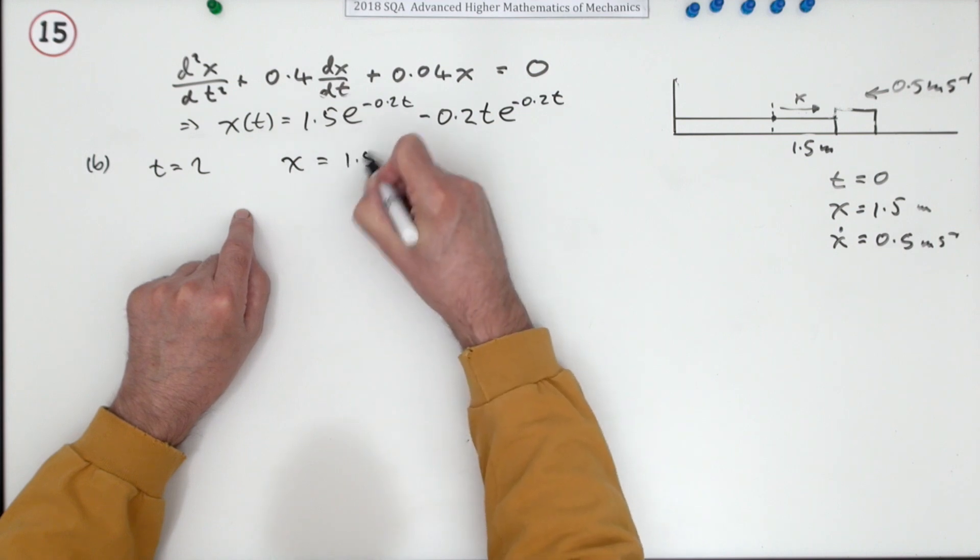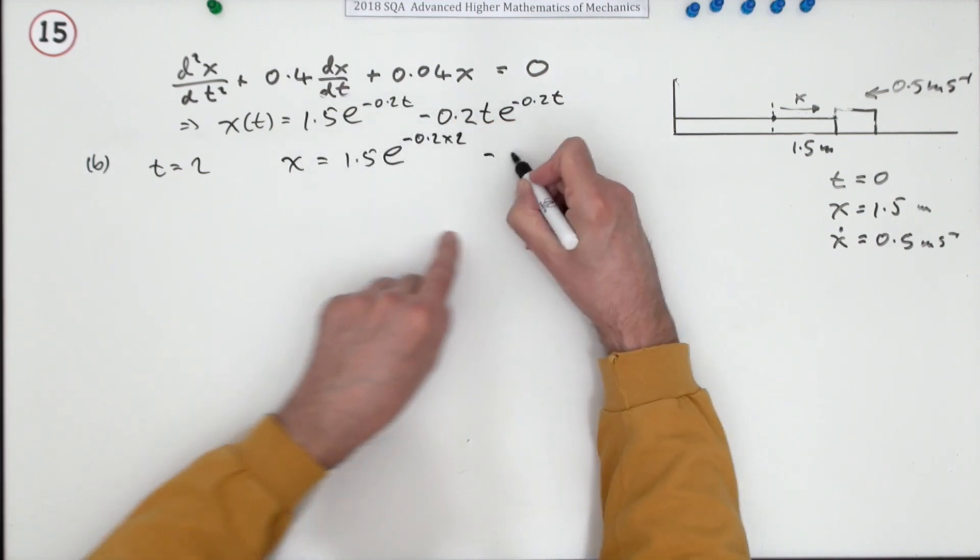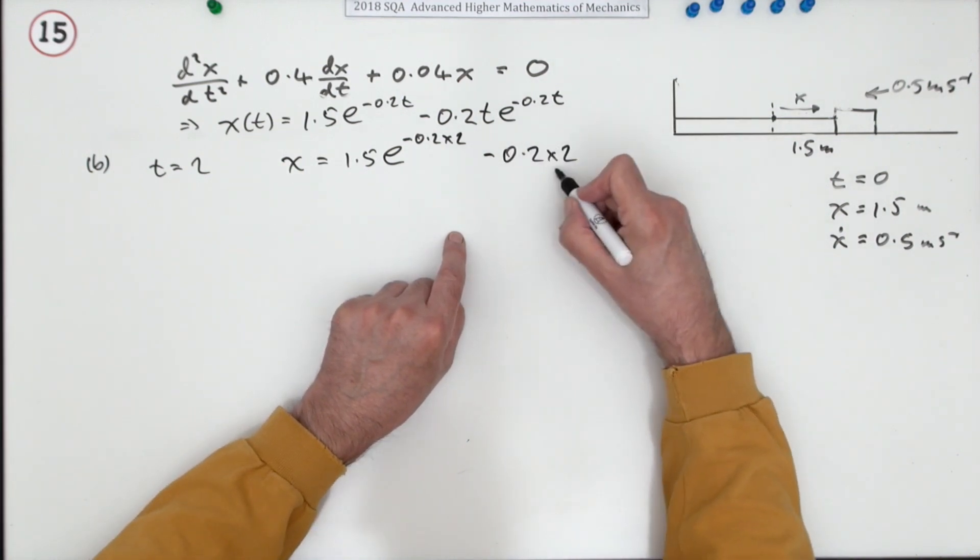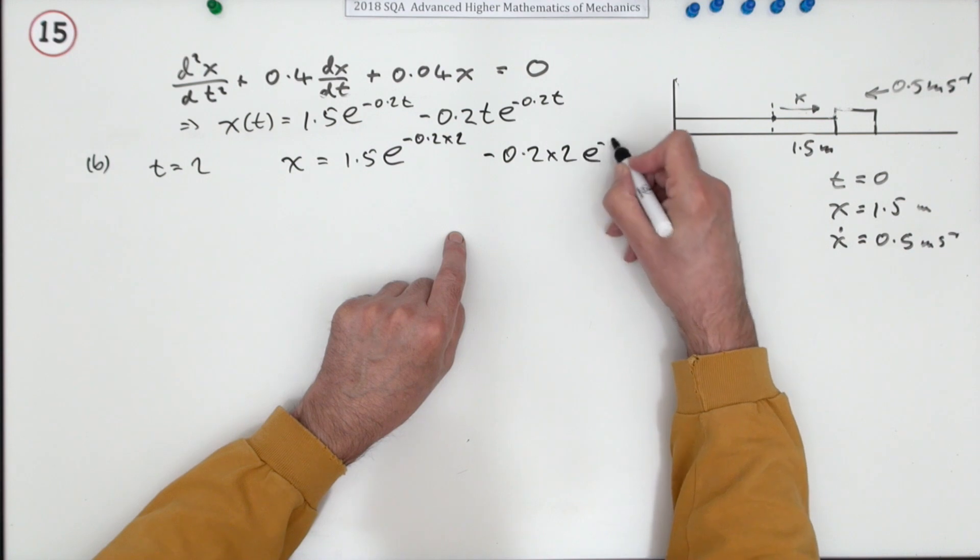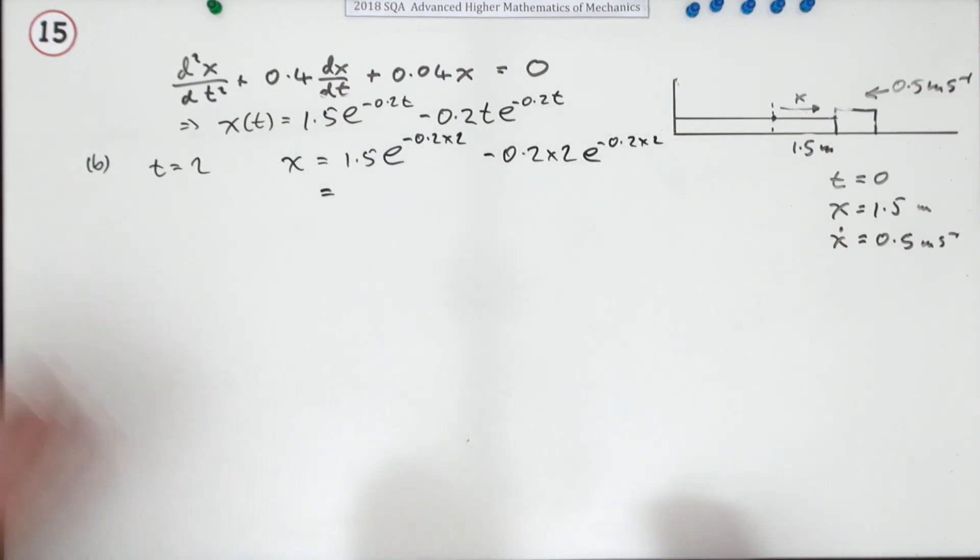Well, that means x will be 1.5e to the negative 0.2 times 2, minus 0.2 times 2... it's just lots of numbers to put into your calculator... times 2e to the negative 0.2 times 2. So let's just pop that lot in.